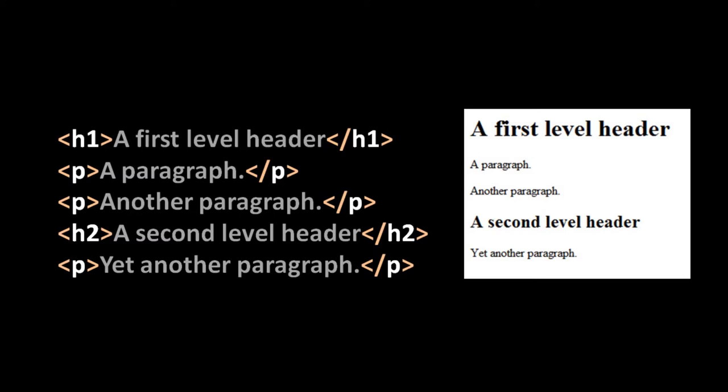For the actual meat of your text — the actual paragraphs that make up those sections — you use the paragraph tag, the p tag. In our example, we have a document with three paragraphs, a first-level header, and a second-level header, and the real practical difference of these tags is basically just the size of the text: h1 tags are the biggest, h2 are somewhat smaller, down to h6 being the smallest, and paragraph tags have the smallest text of all.